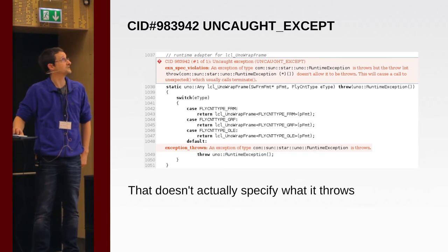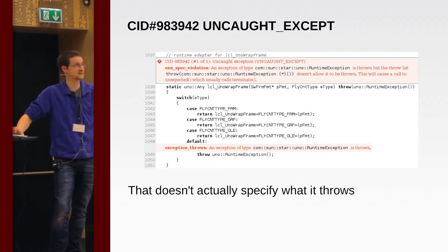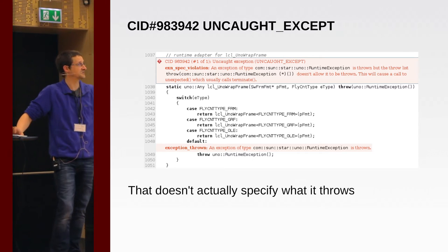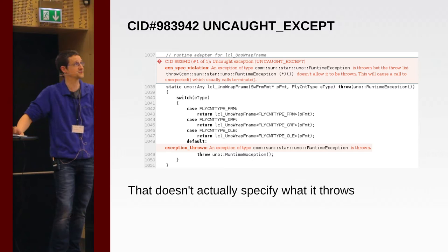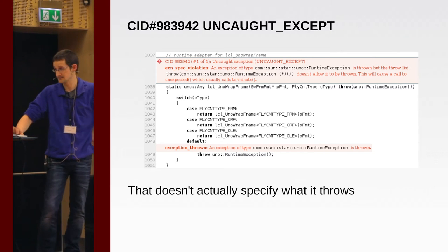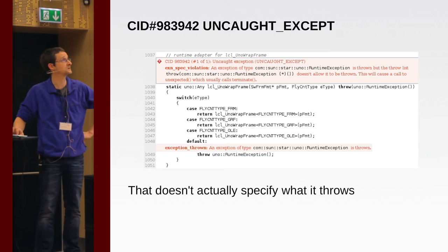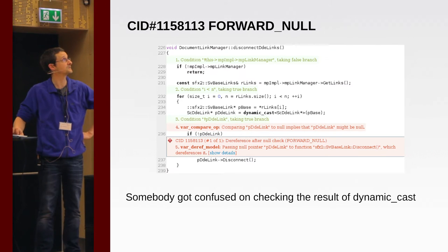The most common type of mistake we had was exception specifications that didn't match what were actually being thrown. This is an example of somebody thinking they were throwing an exception but it doesn't actually match the exception specification — you've got an extra pair of brackets in it, so something that throws an exception actually returns an exception.